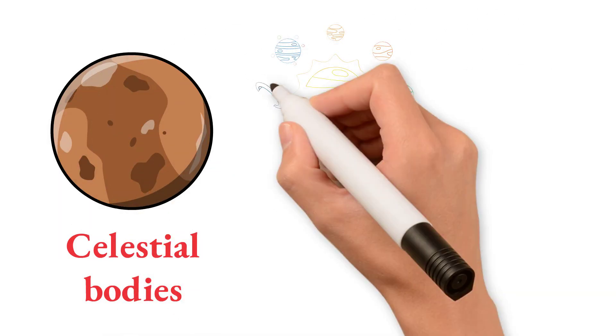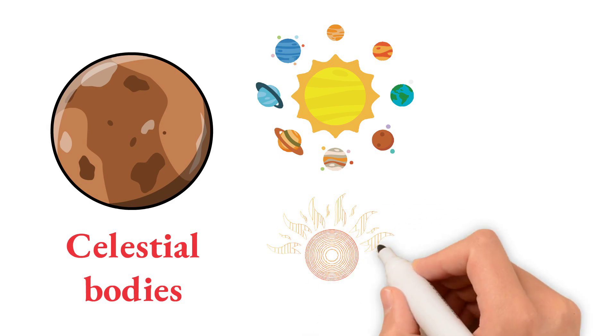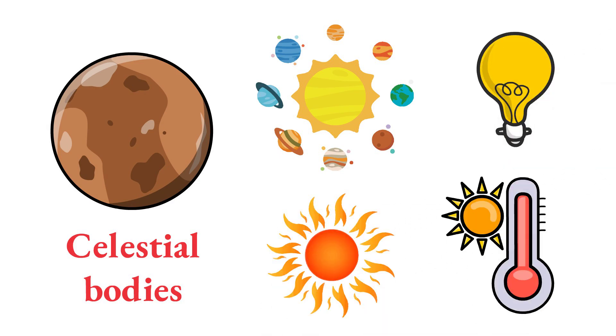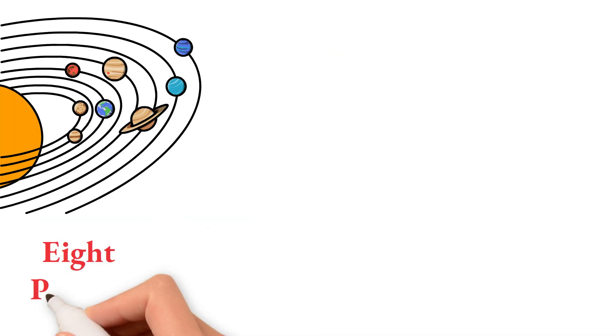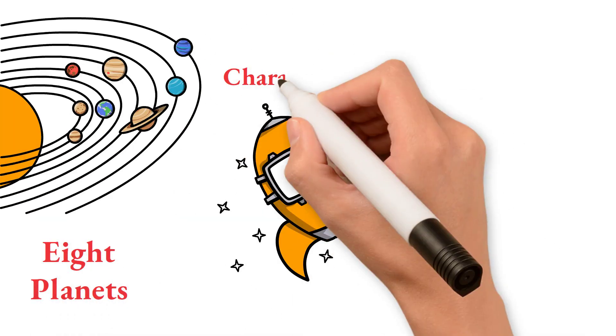At the center of our solar system is the Sun, a giant ball of hot gas that provides us with light and heat. Orbiting the Sun are eight planets, each with its own unique characteristics.